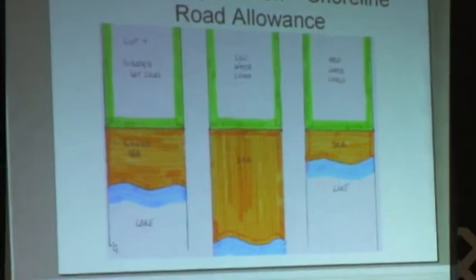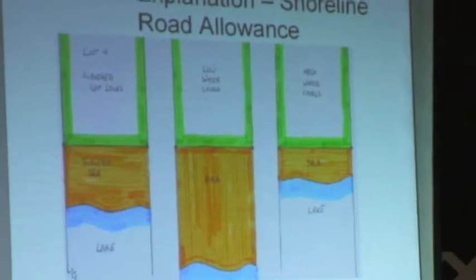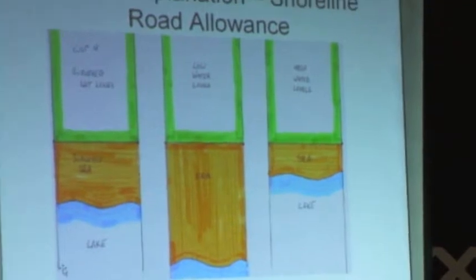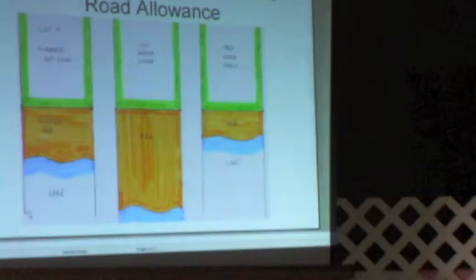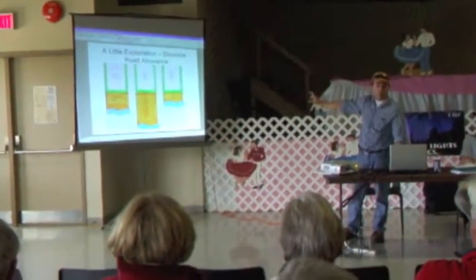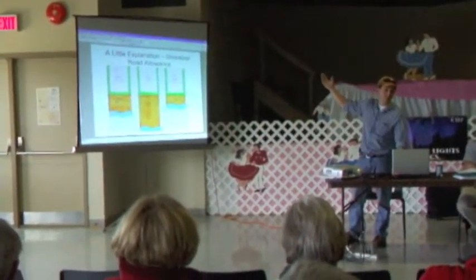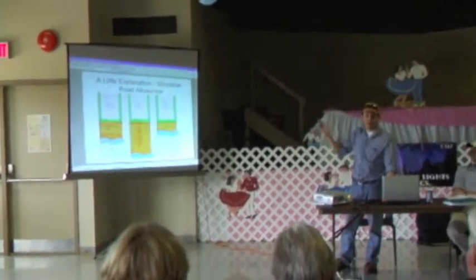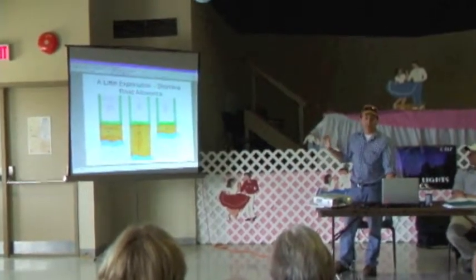Looking at this sketch: the first lot, lot four, shows the surveyed lot lines. At the time the lot was surveyed, that area would be the road allowance. Five or ten years go by and the water goes down — the lot stays the same size, but now the road allowance is almost double. And say another 15 to 20 years go by, the water comes back up — the shoreline road allowance has now shrunk to about a third or half of what it was originally surveyed at, but the property has always remained the same size.